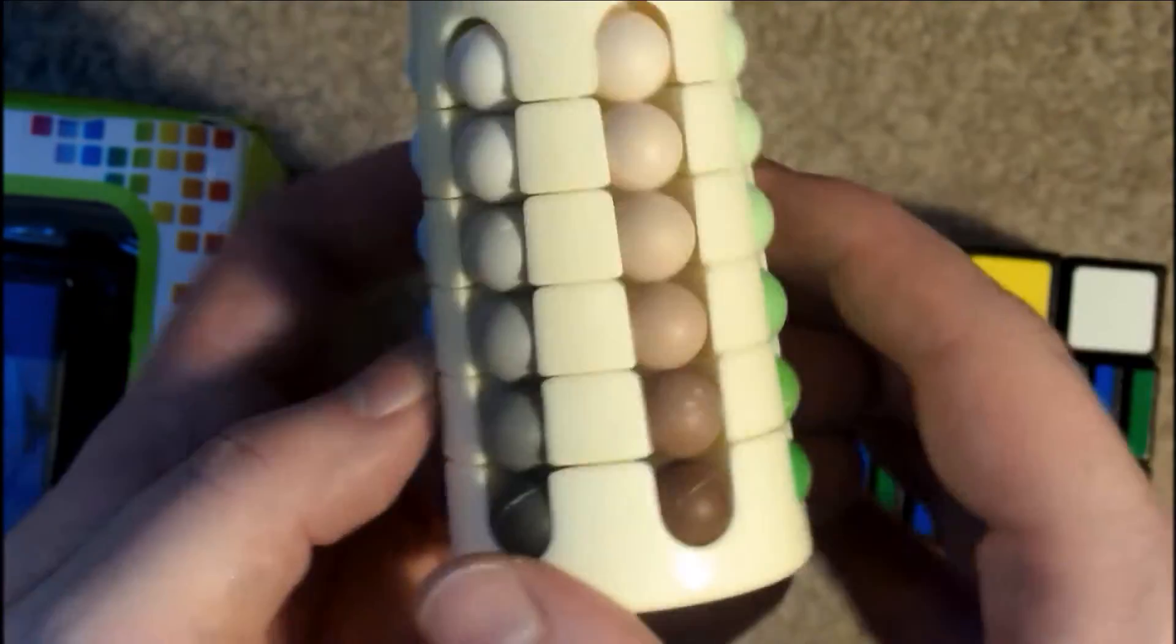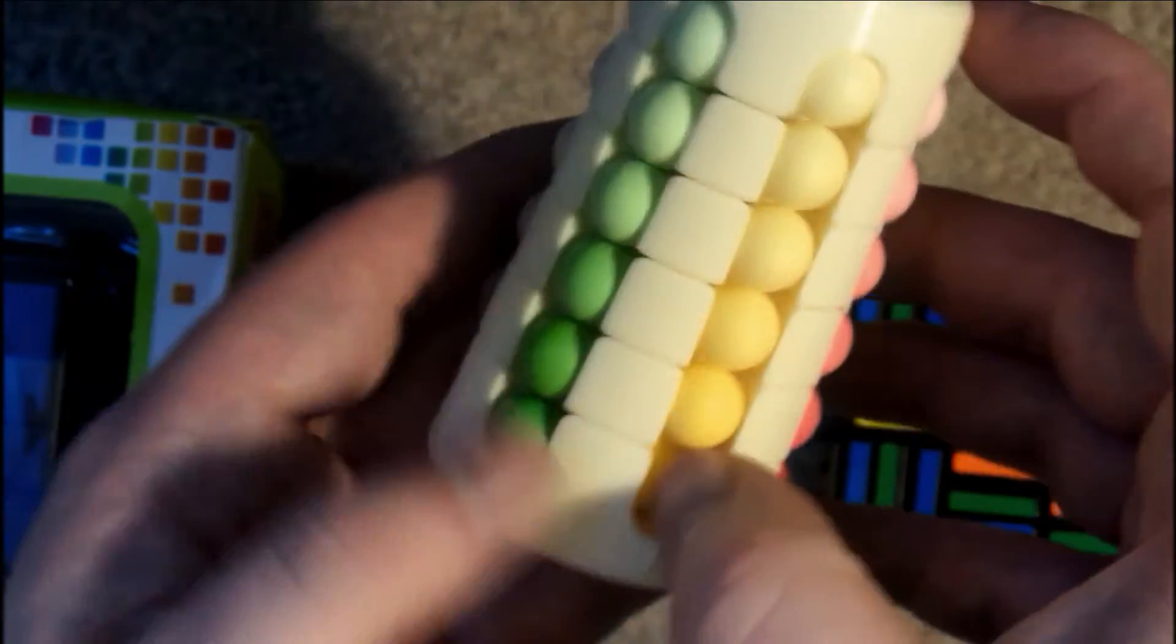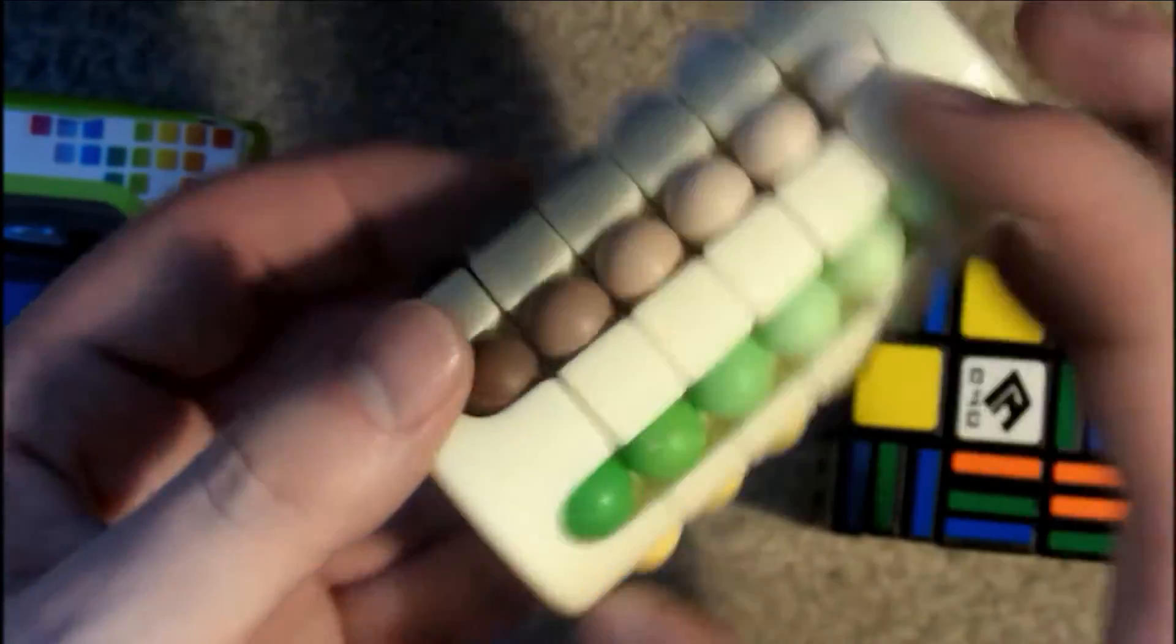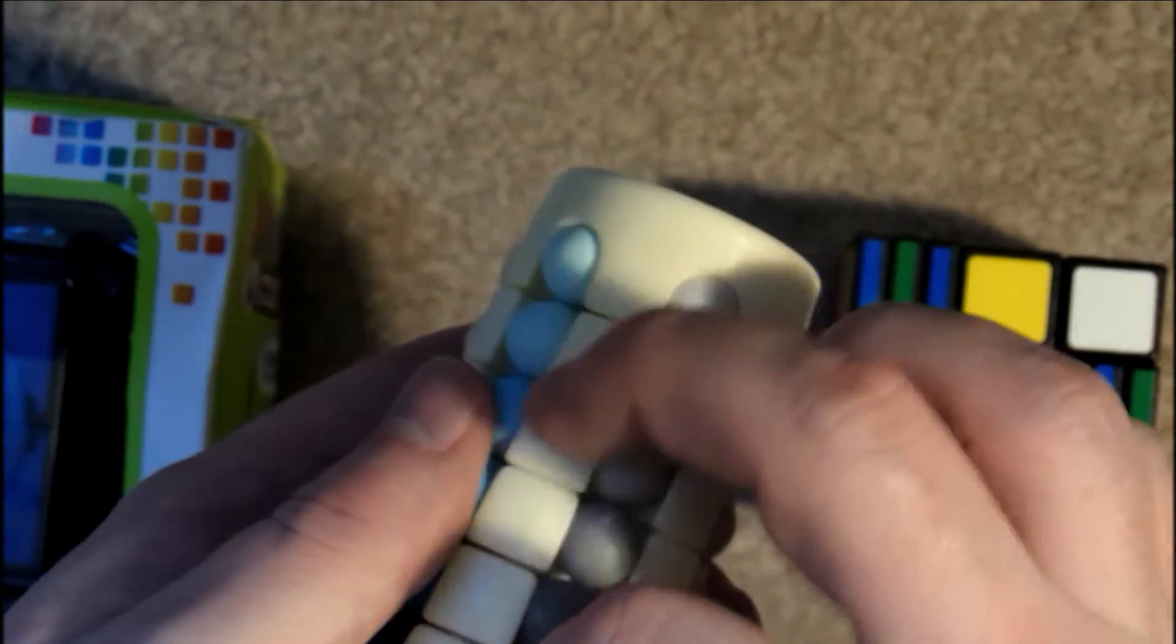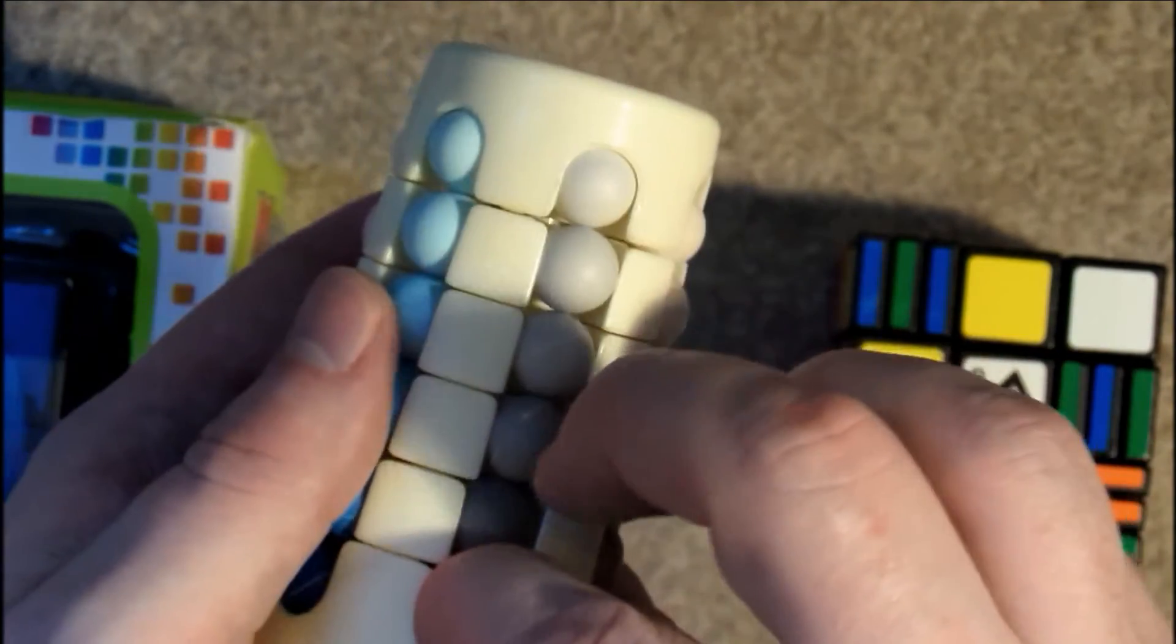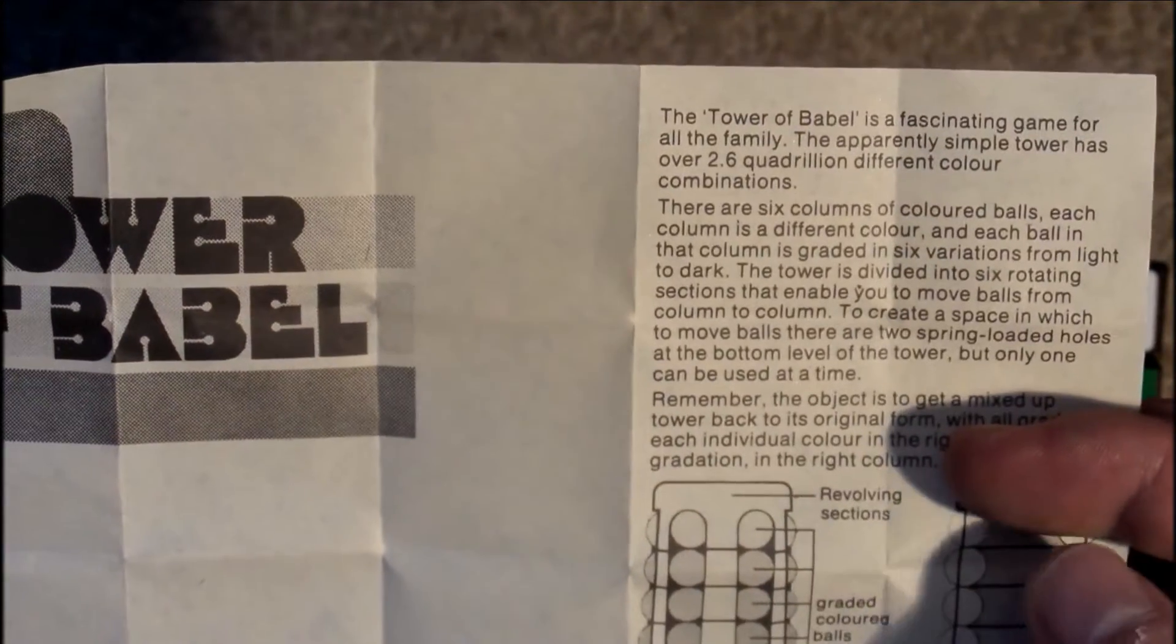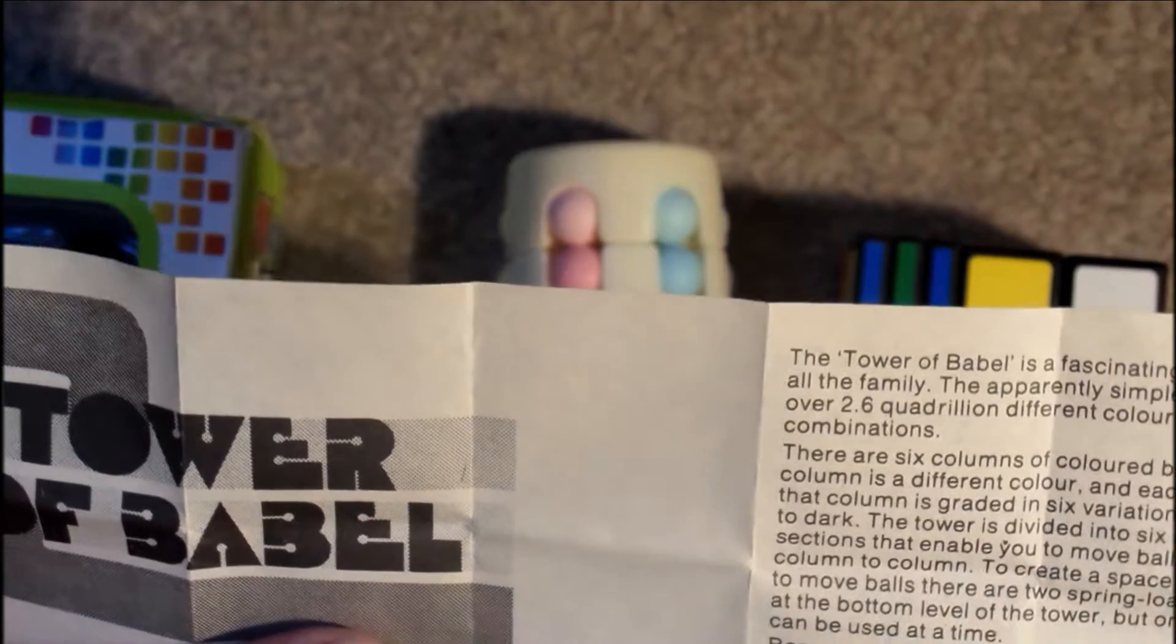Okay, it's not staying in for some reason. That's kind of weird. Do I press both of them in at the same time? Well that's weird. I'm sure they should stay in when you press them in. Let's see if it says anything on the instructions. Okay. Spring loaded recess. Press ball in to create space. Well that's what I've done but it won't stay in for some reason.